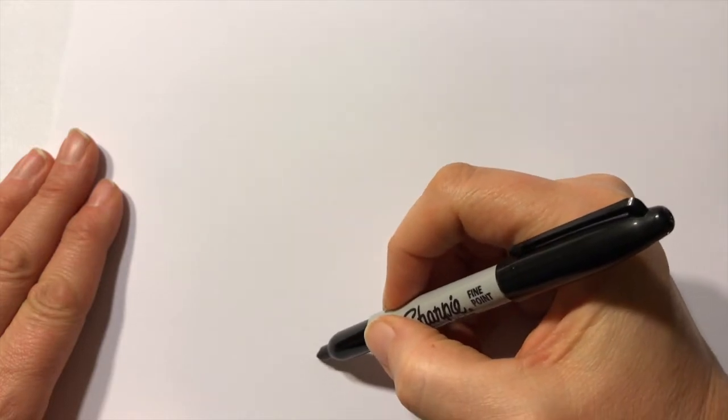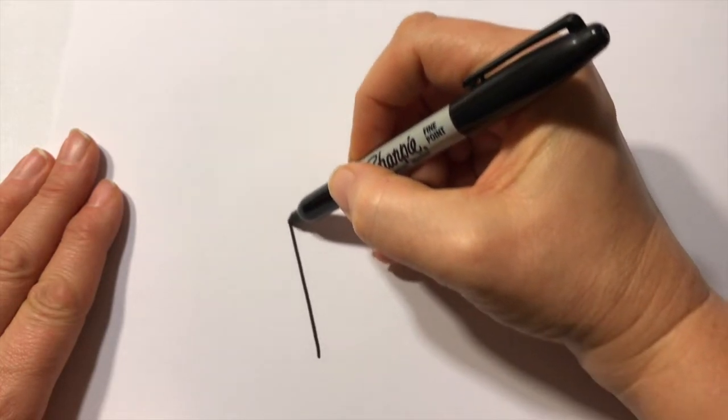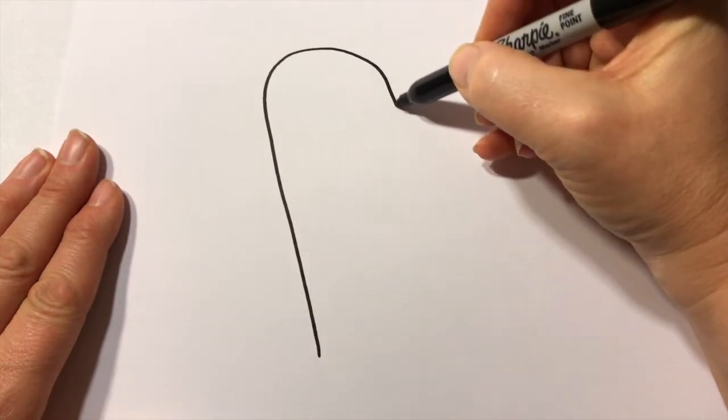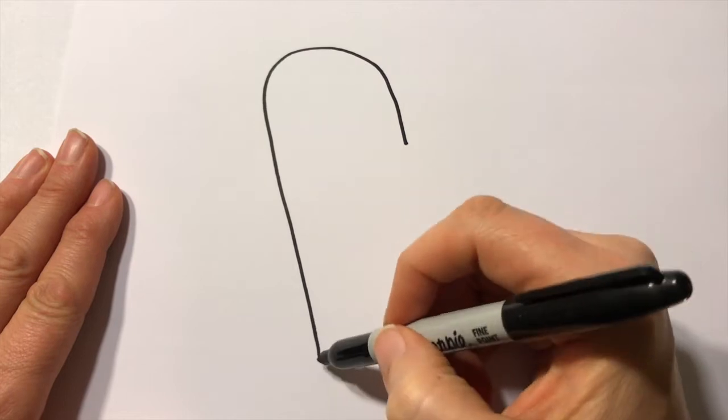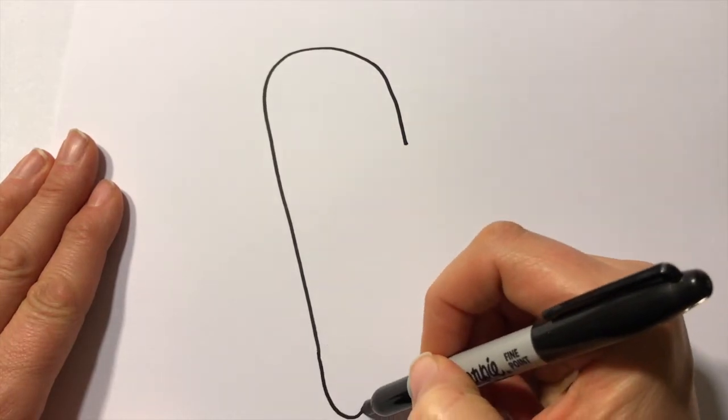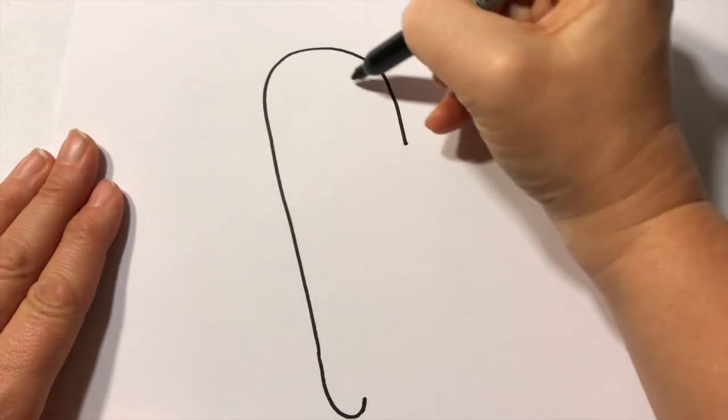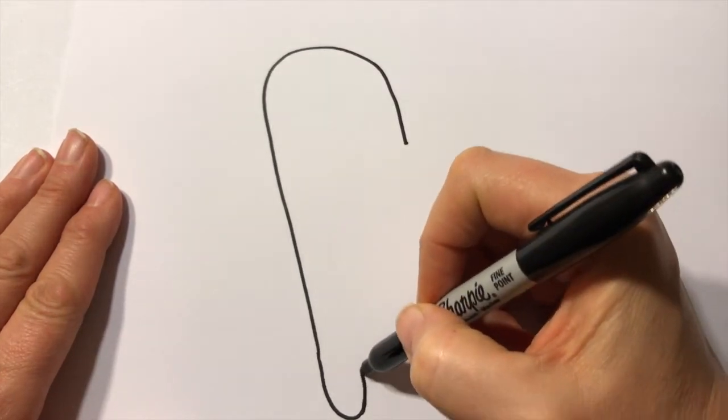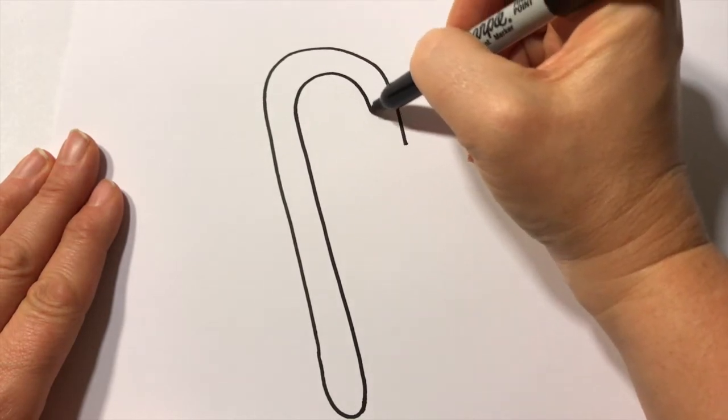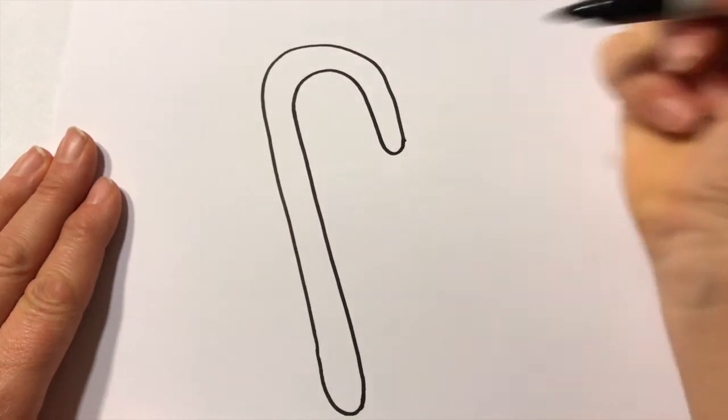So we're going to make a straight line. Curve it around and then curve it around and then we're going to make a little loop on the bottom for the bottom of the candy cane and then follow along evenly and then curve it at the bottom like that.